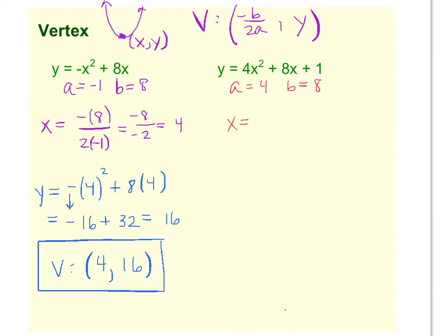So to get the x value, we're going to do a negative, and then b, which is 8, over 2 times our a value, which is 4. So we have negative 8 over 8, which gives us negative 1.